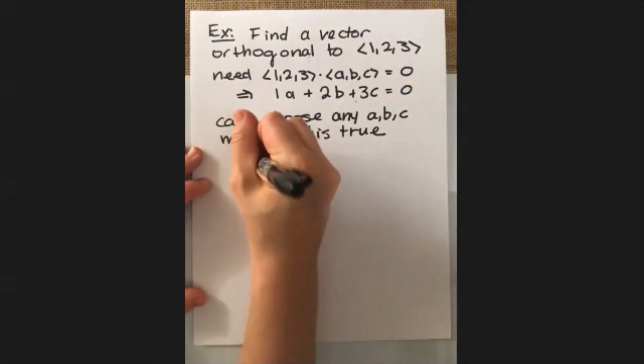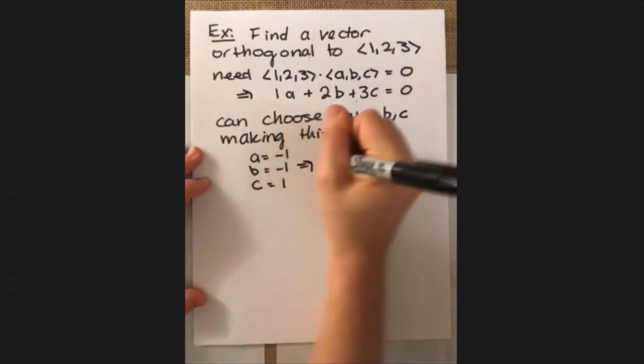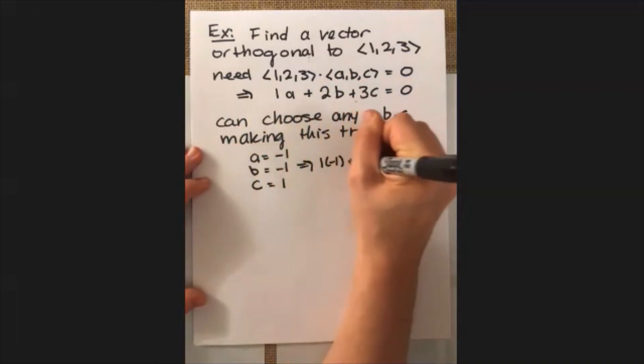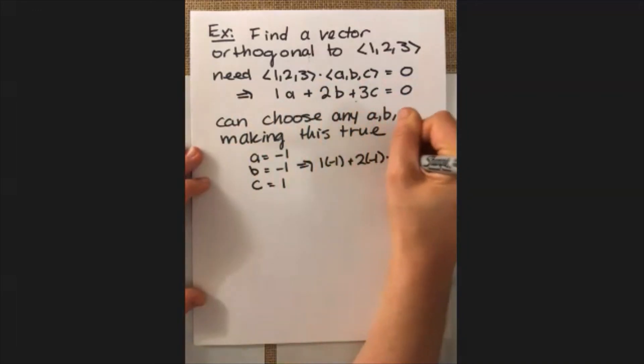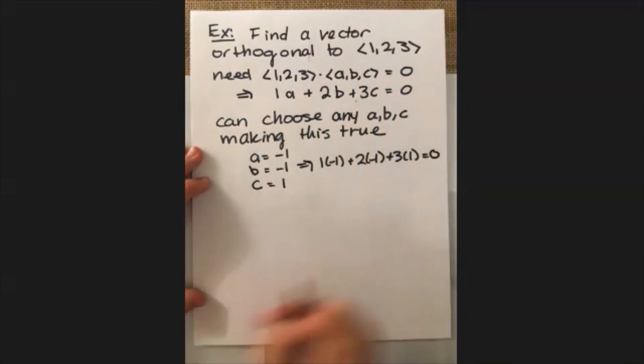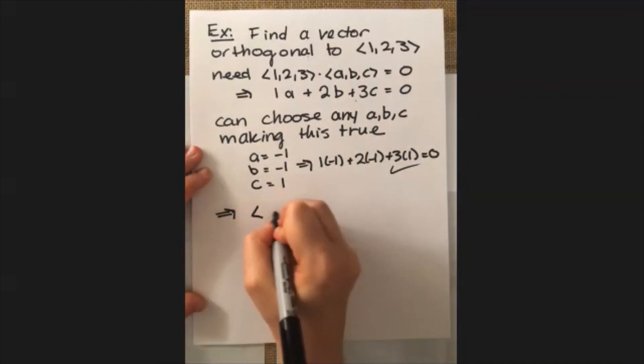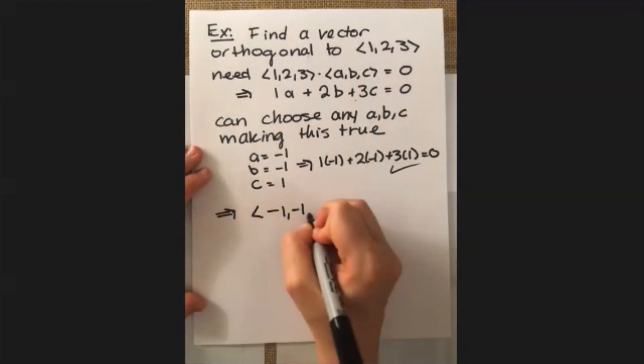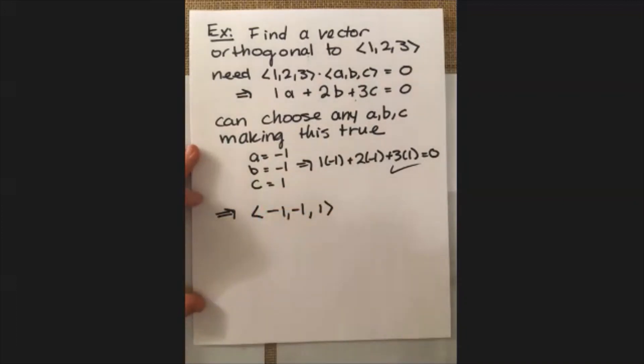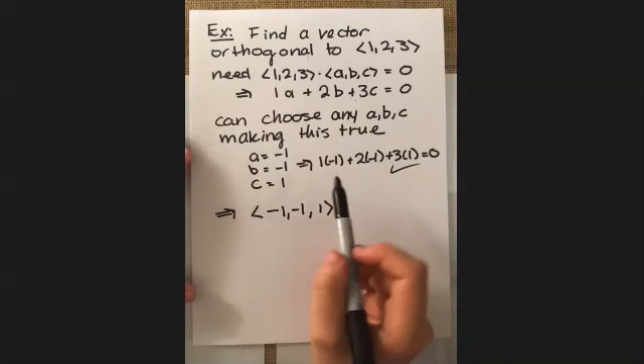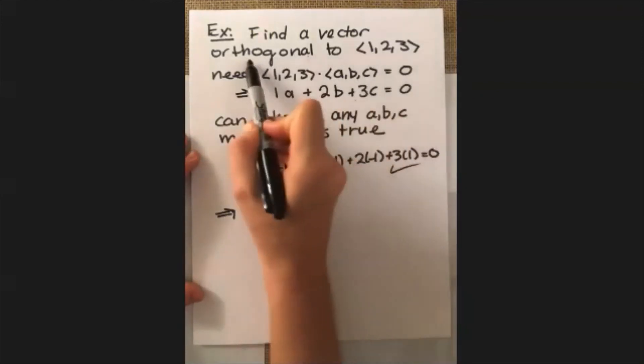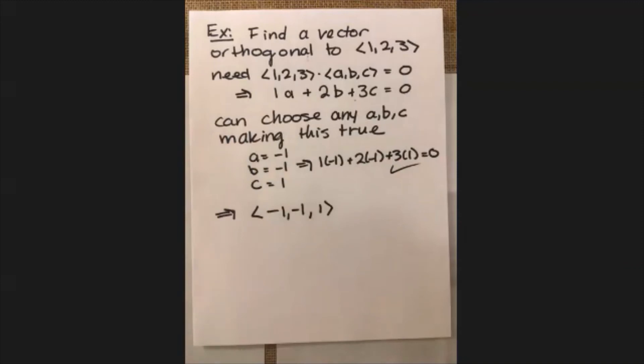I'm just going to go with, say, a equal to -1, b equal to -1, and c equal to 1. So then what you get then is 1 times -1 plus 2 times -1 plus 3 times 1. That all adds up to zero, just like we hoped. So one of the vectors that is a possibility here would be <-1, -1, 1>. Again, there's a wide variety of answers for this, but this is the main property here that you want to go for when you're trying to find your solution to these types of problems.